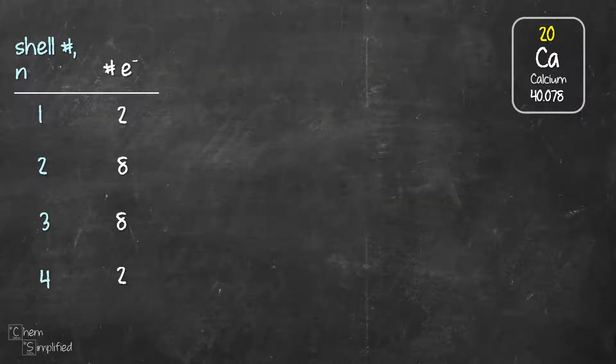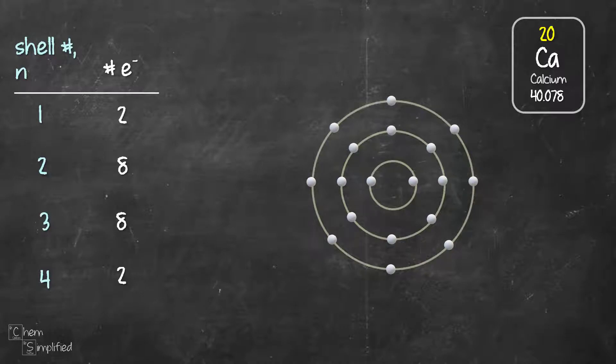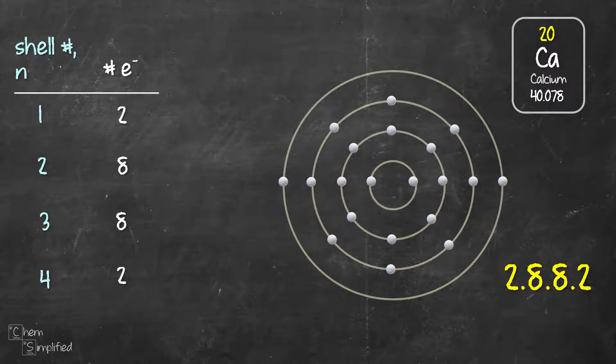Next is calcium with 20 electrons. The first two electrons will go to shell 1. The next 8 will go to shell 2. The next 8 will go to shell 3 and the final two will go to shell 4. The electron configuration for calcium is 2.8.8.2.